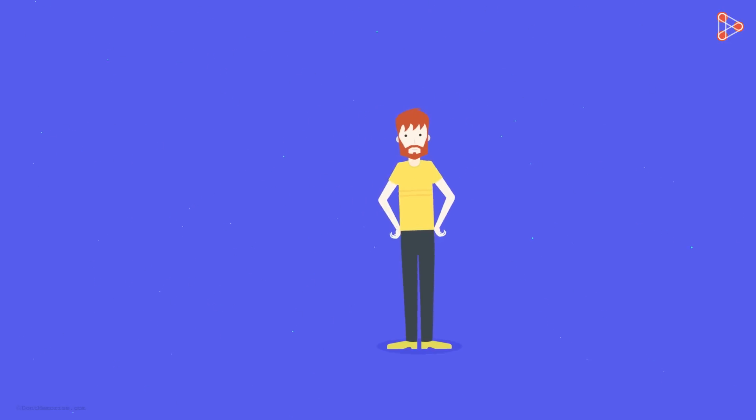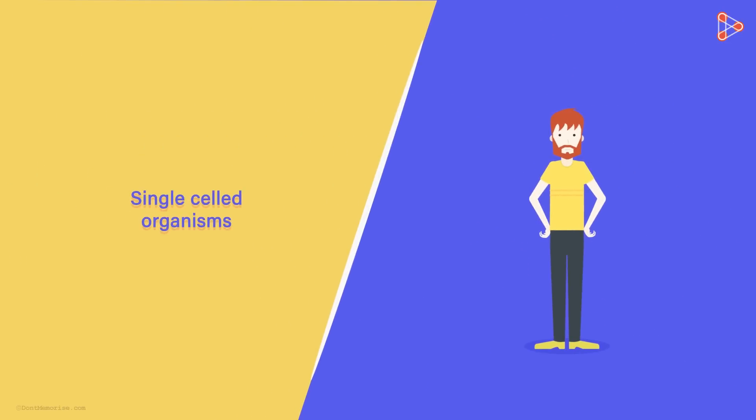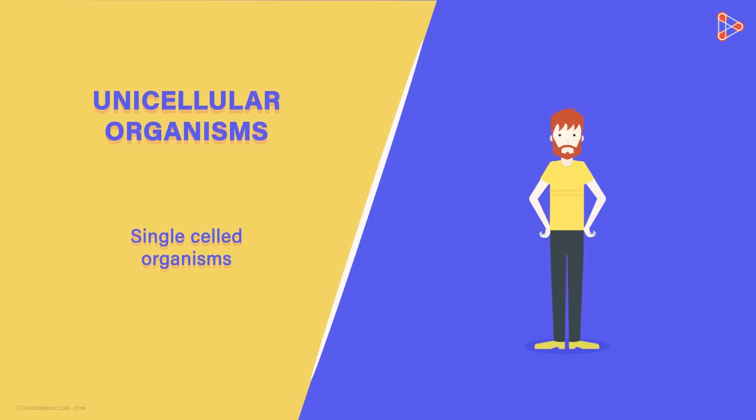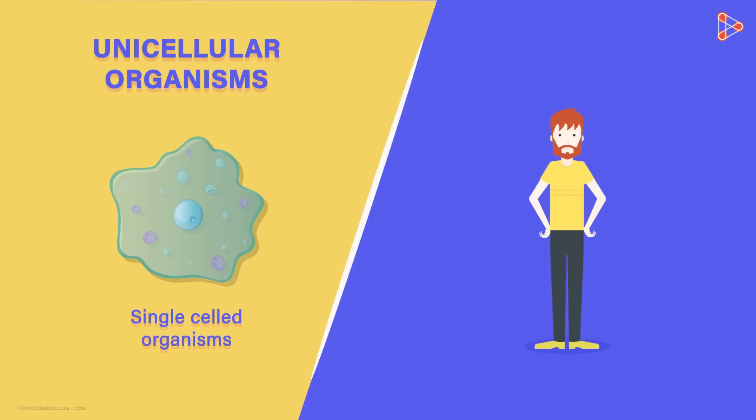There are organisms which are made up of only a single cell. They are called the unicellular organisms. Bacteria are one of the best examples of this category.